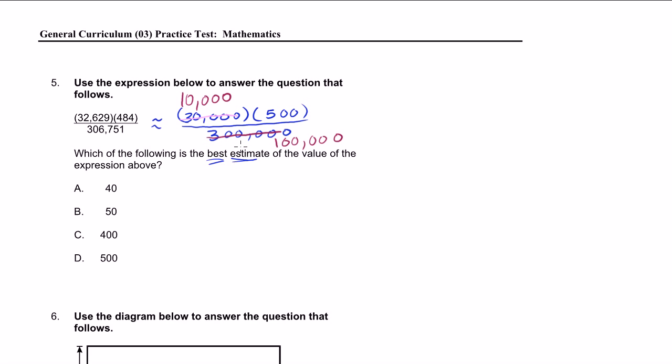And then I can start canceling out zeros. If I divide the top and the bottom by 10,000, I can essentially get rid of four zeros on the top and the bottom. So then this 10,000 divided by 10,000 will just become 1. 100,000 divided by 10,000 is just 10.